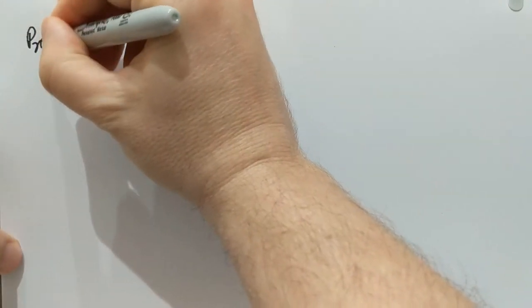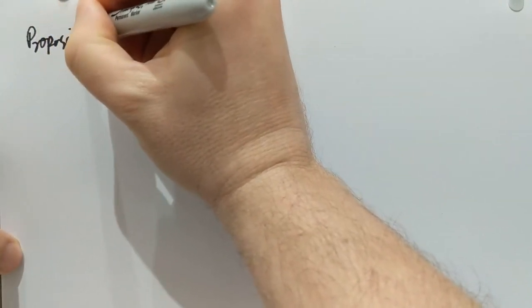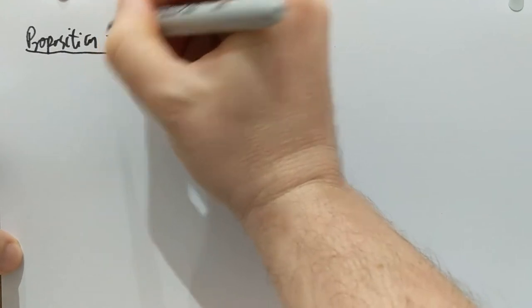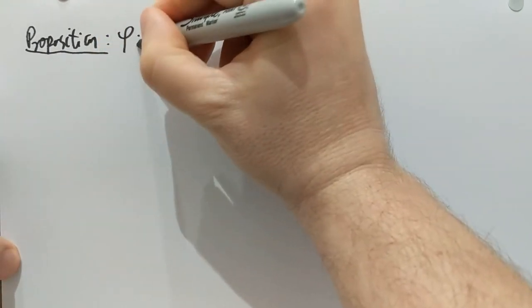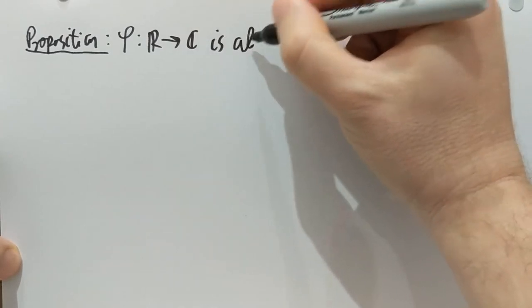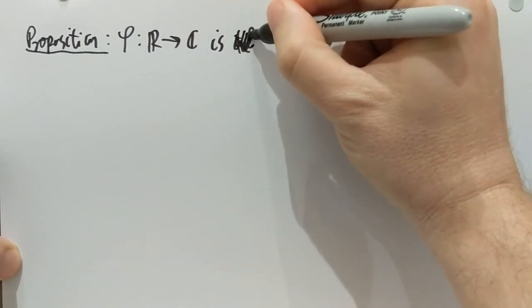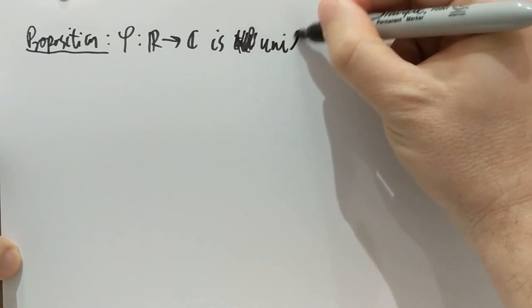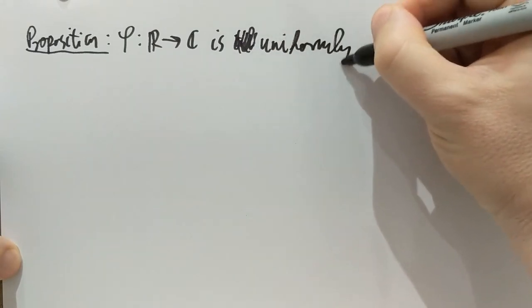The first property I want to mention here, let's call this a proposition, is that φ, as a function again from real to complex, is absolutely—sorry, uniformly continuous.